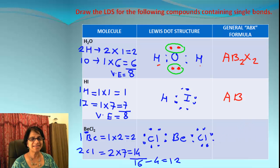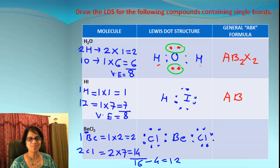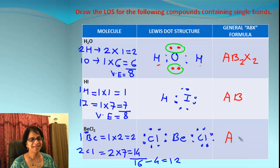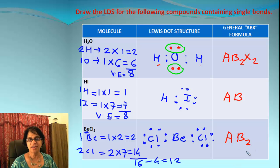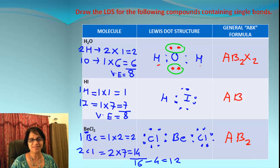For the ABX formula of BeCl₂: A is the number of central atoms — we only have 1 beryllium, so A is 1. B is the number of atoms surrounding the central atom — we got 2. And for X, we don't have any unshared electron pairs on the central atom, so there is no X. The formula is AB₂.